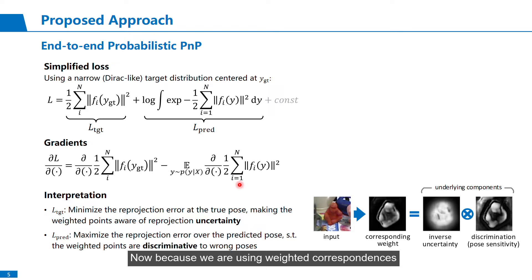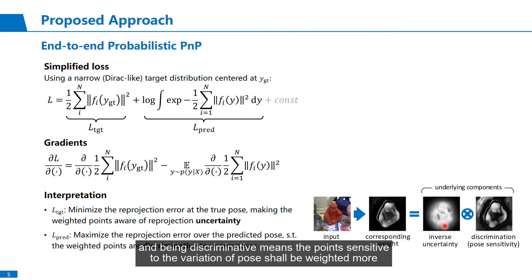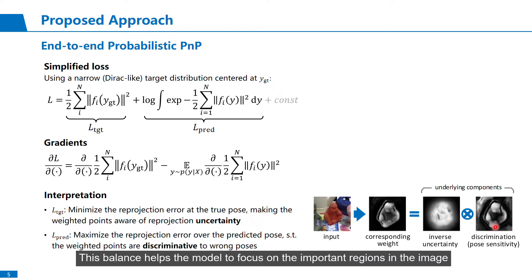Now, because we are using weighted correspondences, these two terms drive the weights to be both uncertainty-aware and discriminative. Being uncertainty-aware indicates the inner region with higher confidence shall be weighted more, and being discriminative means the point sensitive to the variation of pose shall be weighted more. This balance helps the model to focus on the important regions in the image, somehow resembling the attention mechanism.